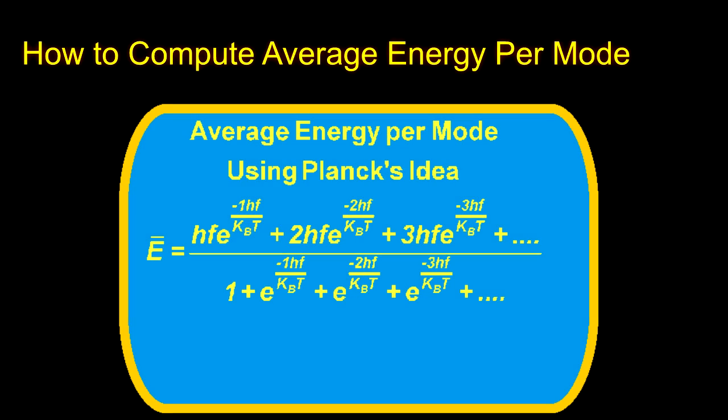The average energy in each mode is calculated with the usual method of weighting each energy by the Boltzmann's weight, e to the minus e over kt, and dividing by the partition function. Thus, we get this formula.